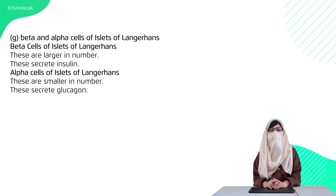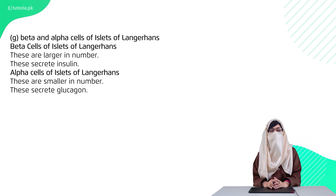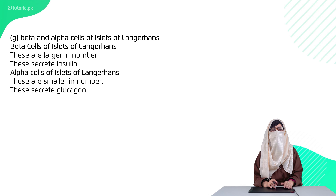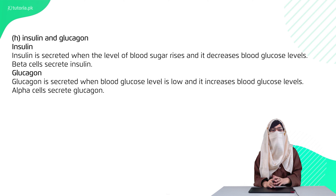The seventh difference: beta and alpha cells of the Islets of Langerhans. The beta cells of the Islets of Langerhans produce insulin. The alpha cells produce glucagon. Alpha cells are smaller in number compared to beta cells.